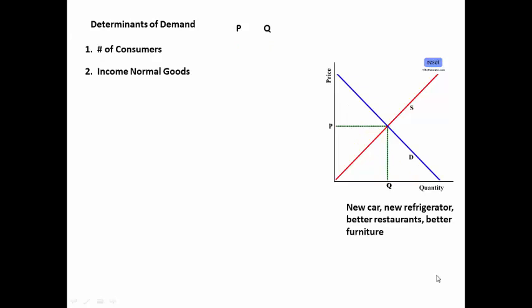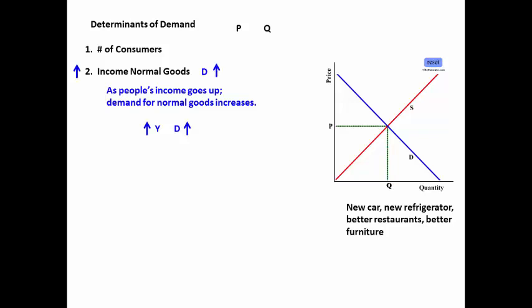Number two, income — normal goods. As people's incomes go up, the demand for normal goods increases. An economist would say: as income goes up — Y stands for income — the demand for normal goods increases. So a normal good would be a new car, new refrigerator, better restaurants, causing the curve to shift to the right,